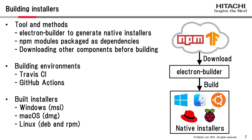This slide is about how to build the installers. To generate native installers, we used Electron Builder. If additional NPM modules or components are required, we need to download them in advance. For the build environment, we are currently using Travis CI, but according to the documentation, it is at an early stage as a Windows environment. Therefore, I tried GitHub Actions instead. Build outputs are an MSI file for Windows, a DMG file for macOS, and DEB and RPM files for Linux environments.